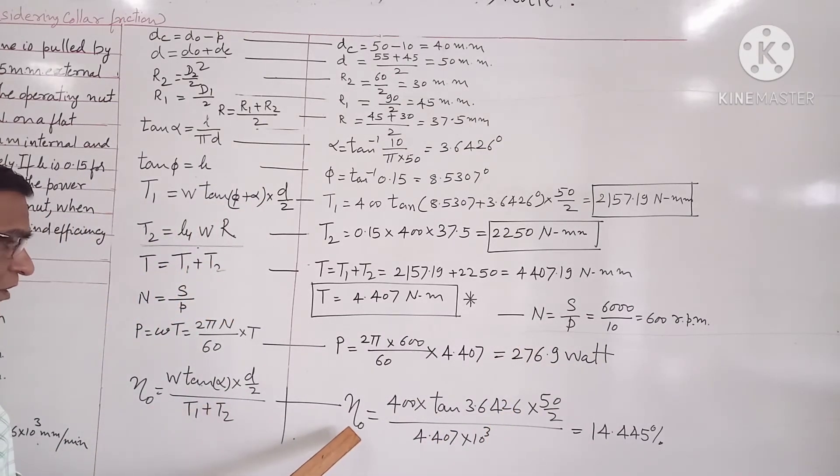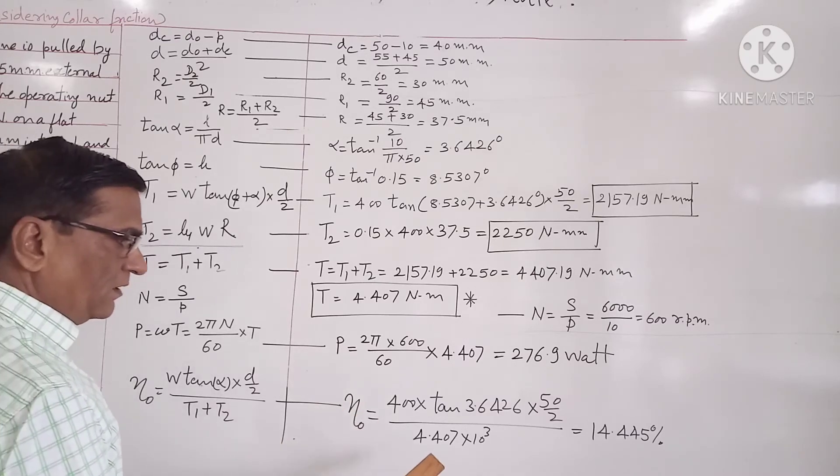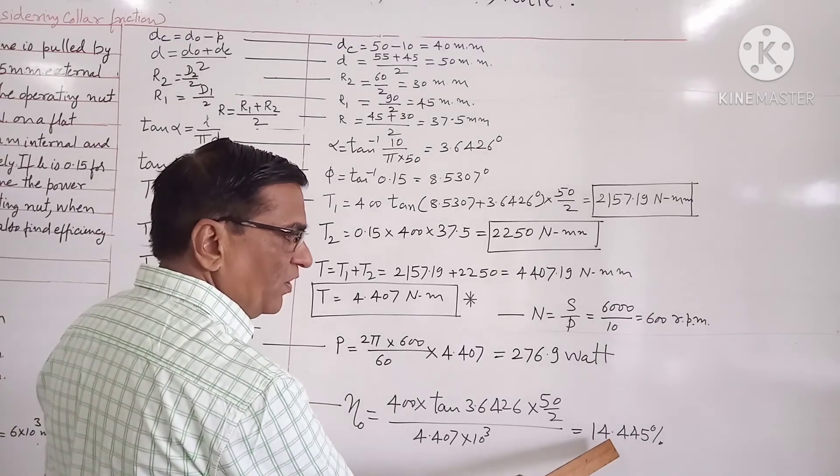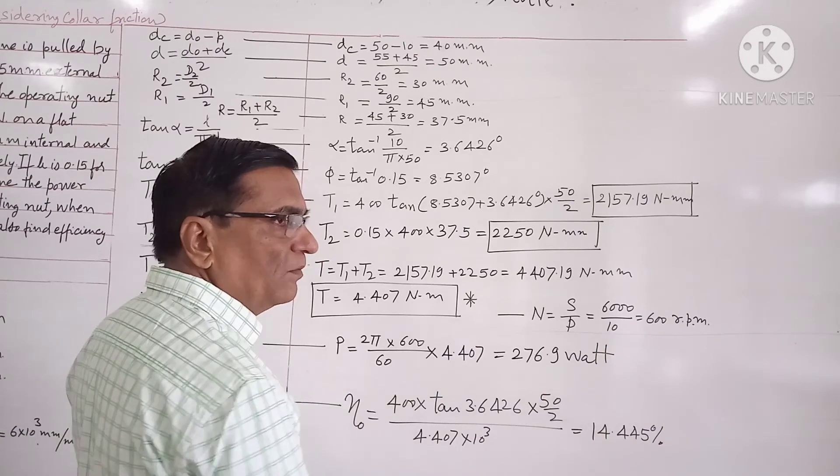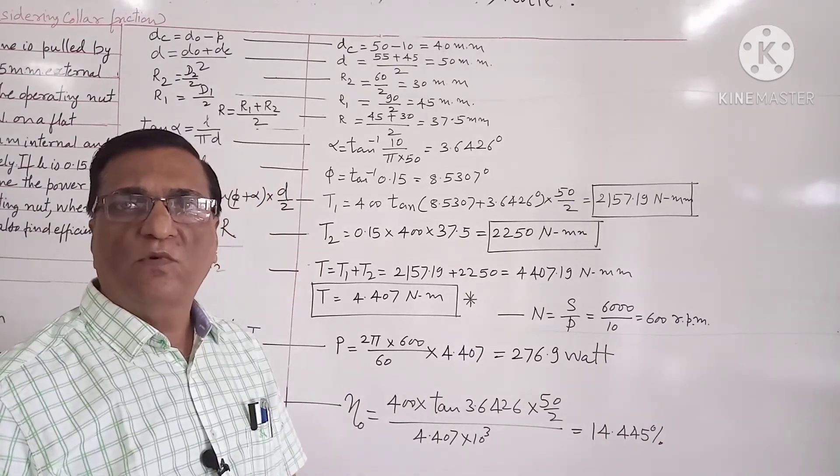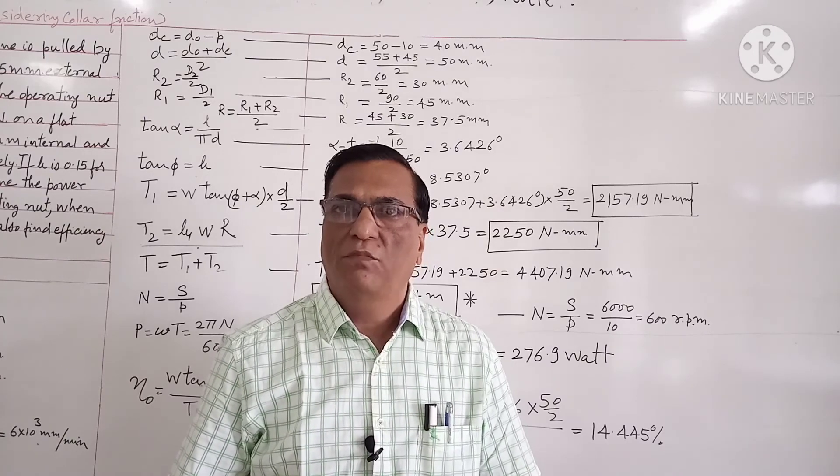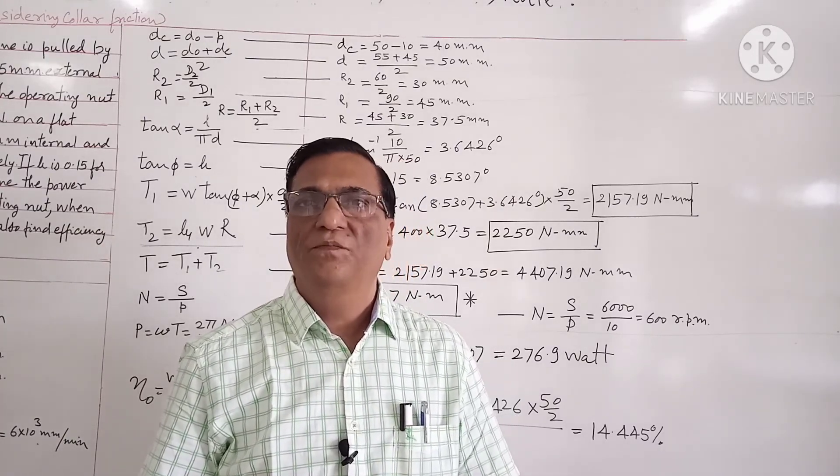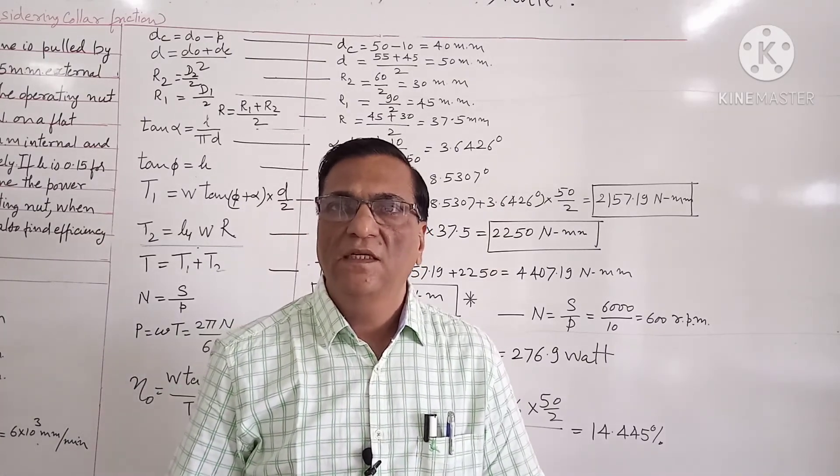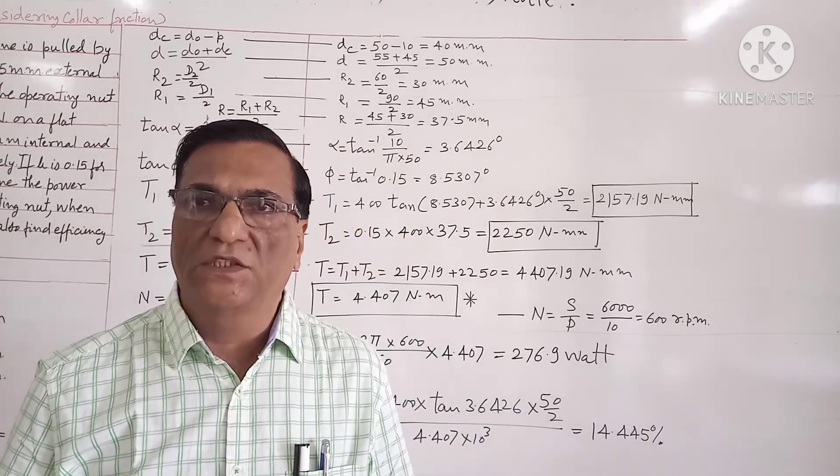And from this formula we will calculate the overall efficiency that comes out to be 14.445 percent. So this is all about the problem of power screws based on or considering collar friction. Thank you very much.